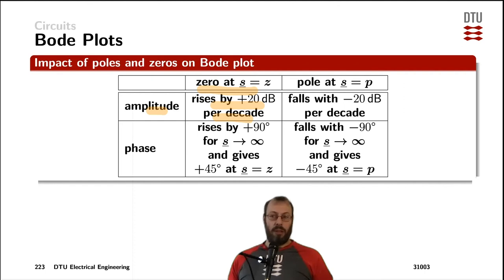If we have a pole at a certain frequency, the amplitude starts to fall with minus 20 dB. If you have two zeros or two poles at the same frequency, the rise of the amplitudes sum up and you start to rise or fall by plus or minus 40 dB.